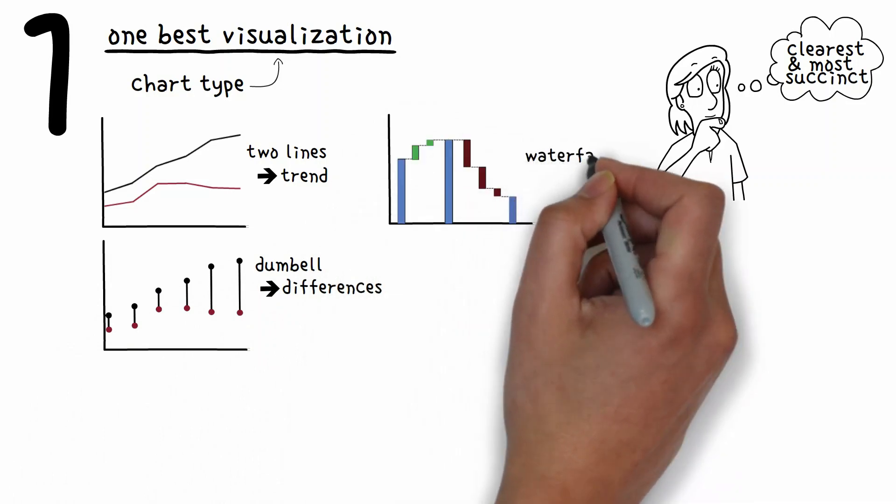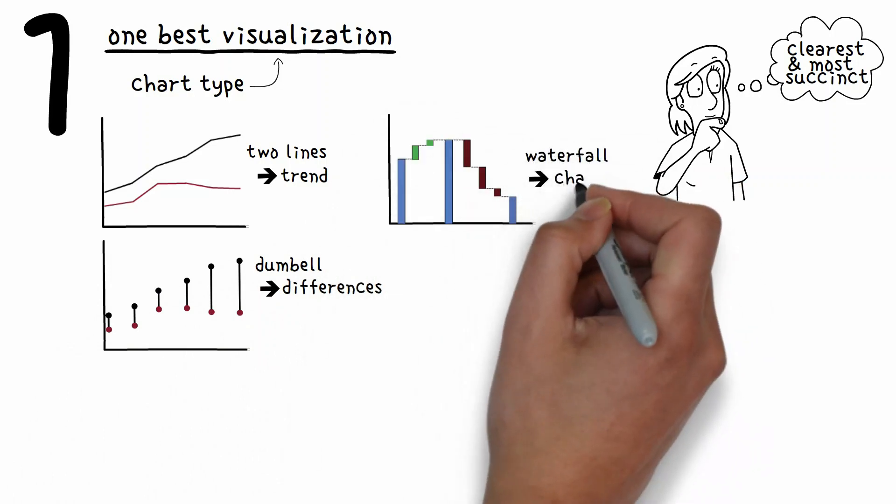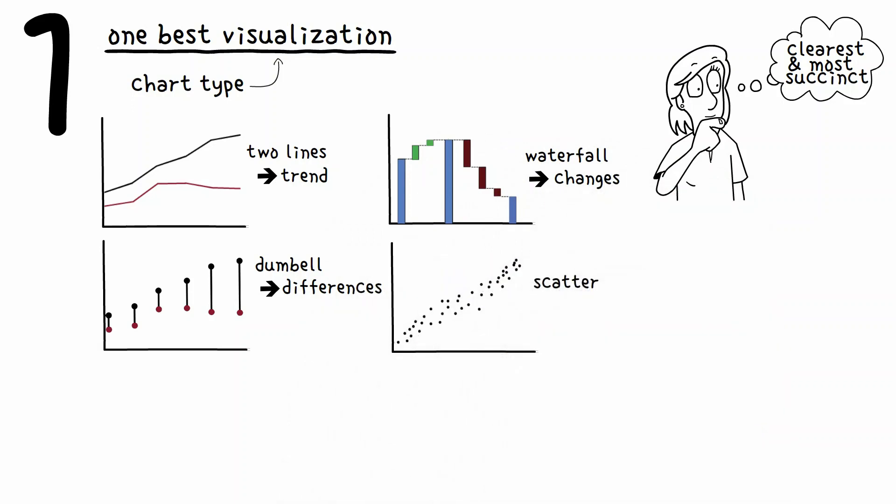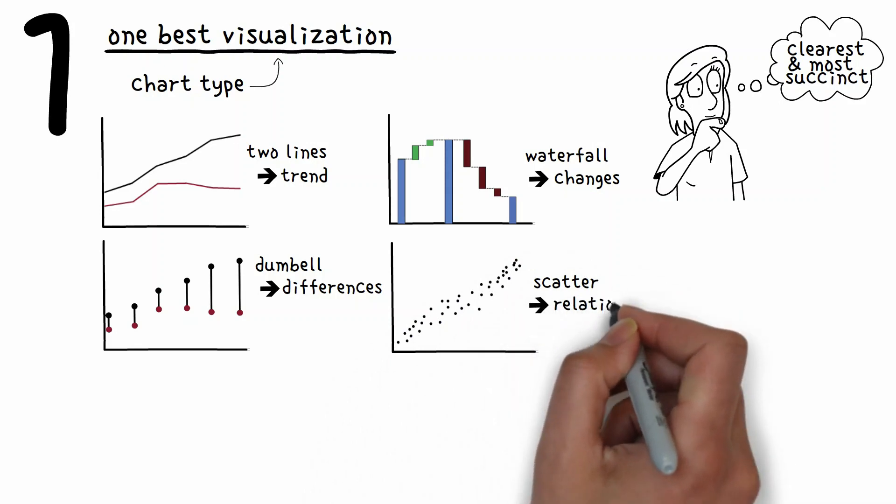A waterfall chart is great for showing the steps of changes getting from data point A to data point B, and a scatter plot is perfect when you're looking for relationships or correlations.